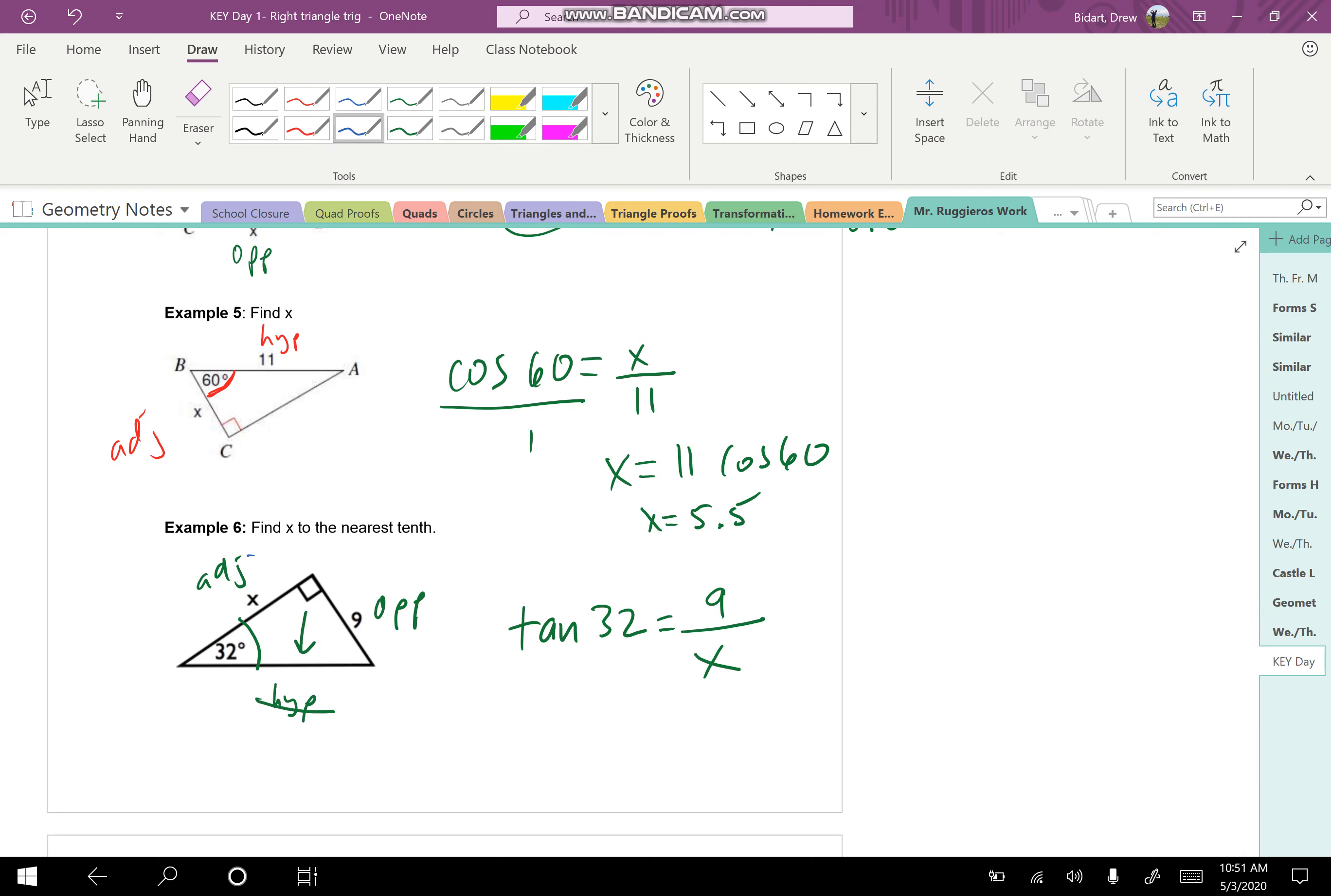So the hypotenuse is out. What uses opposite and adjacent? That's tangent, right? TOA. The tangent of the angle is equal to the opposite over the adjacent. So this is what I was trying to say earlier, is that it's a little harder when the x is in the denominator. Because when I cross multiply, 9 times 1 is 9. And I have to multiply x times the tan of 32.